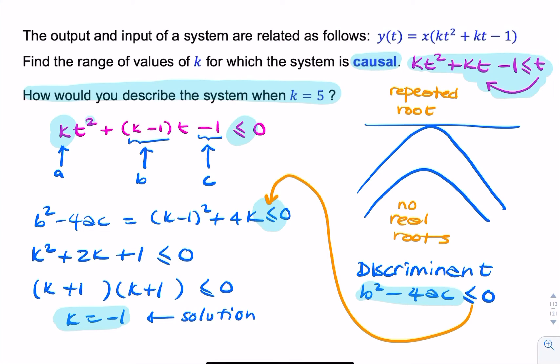If k equals minus 1 is the only value that will make the system causal, we can say that when k equals 5, the system will be non-causal.